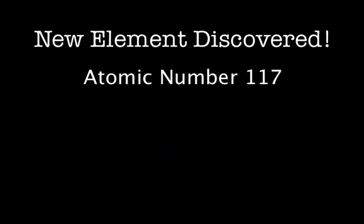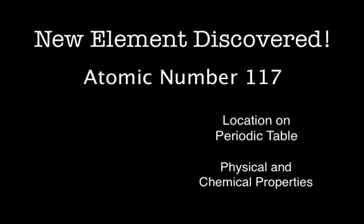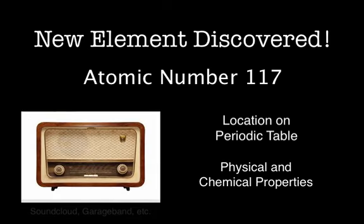Now that you have a better understanding of the organization of the periodic table, it's time to use that knowledge in a hypothetical situation. We're going to pretend that you have just discovered a new element with an atomic number of 117. Where would it be located on the periodic table? What are the physical and chemical properties of this element based on its location? Please give your element a name and create a radio newscast explaining your discovery. Please refer to the learning scale on our class site for information regarding grading.